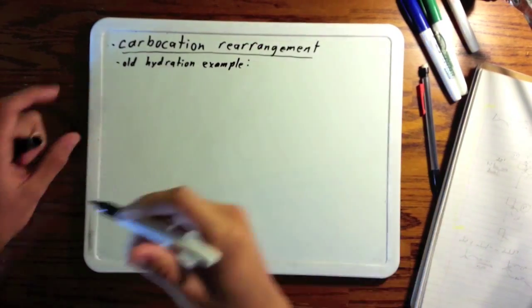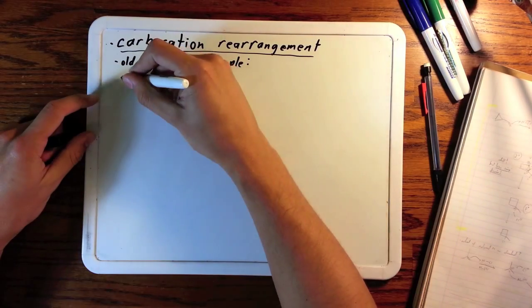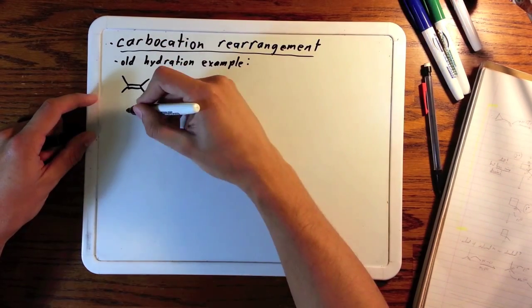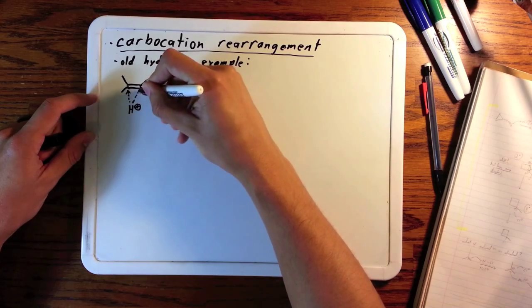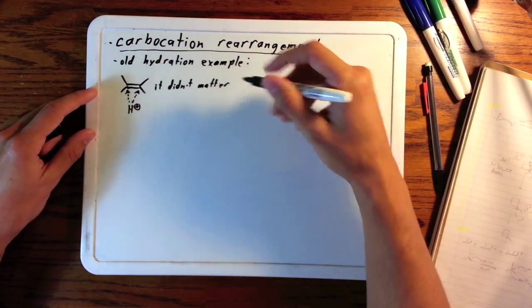First let's look back at our old hydration example. It was a simple alkene with just a methyl group on every end of this double bond. It didn't matter whether the H added to either side because they were the same.